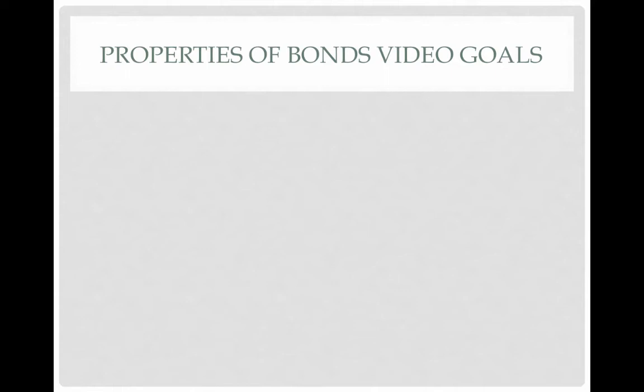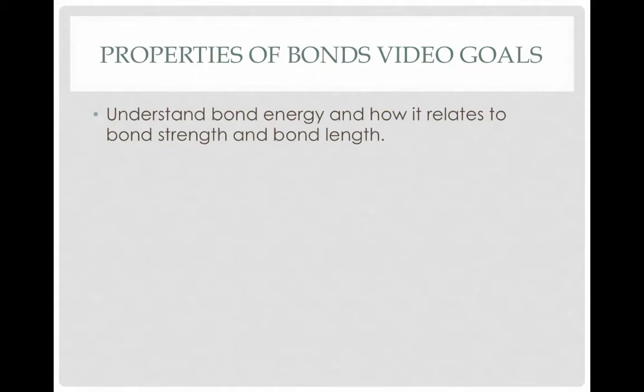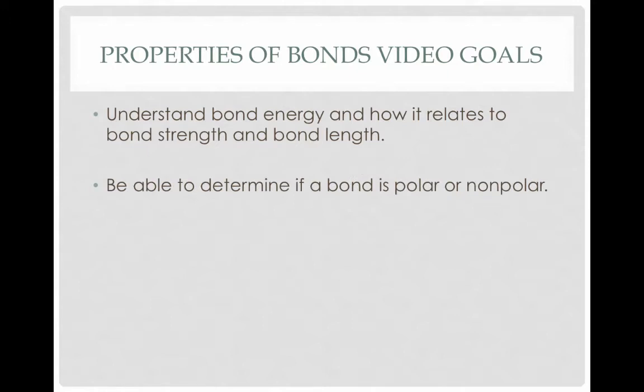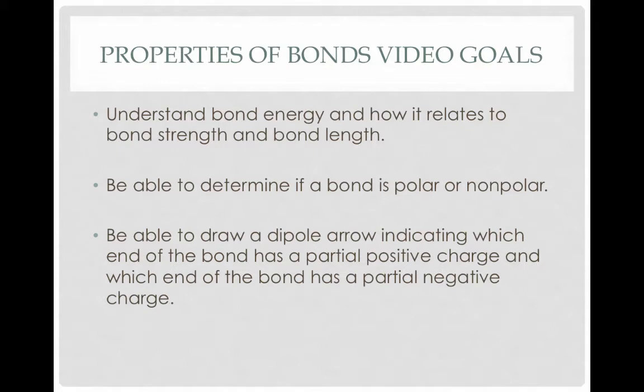Welcome to Unit 9, Video 2, Properties of Bonds. By the end of this video, you should understand bond energy and how it relates to bond strength and bond length. You should be able to determine if a bond is polar or nonpolar, and draw a dipole arrow indicating which end of the bond has a partial positive charge and which end has a partial negative charge if the bond is polar.